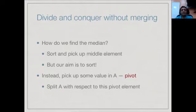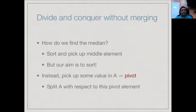Of course there is a catch: how do we find the median? At the beginning of our discussion we said one reason we want to sort is to do statistical things like find the median. If we have sorted the array, the median is the middle value — but our goal now is to sort the array. We cannot assume we have the median, because sorting is an easy way to find the median. It is a chicken-and-egg problem: we cannot use the median to sort.